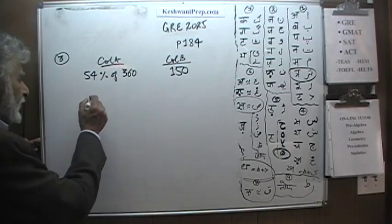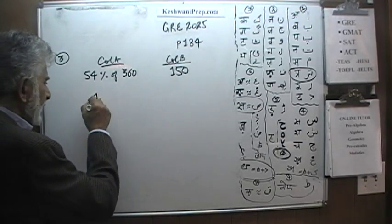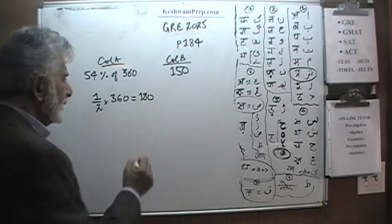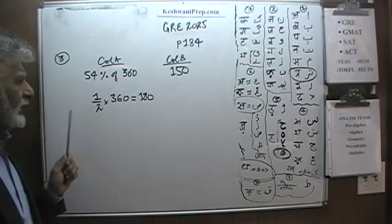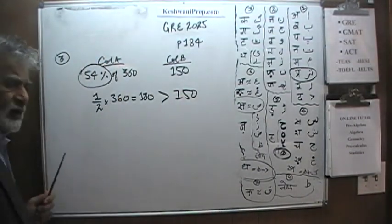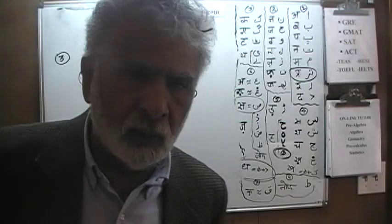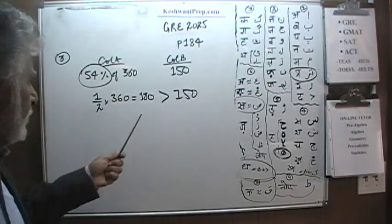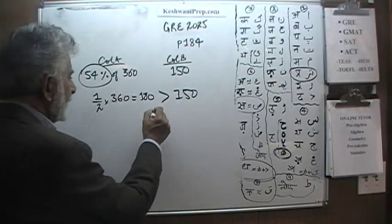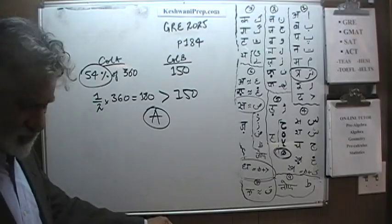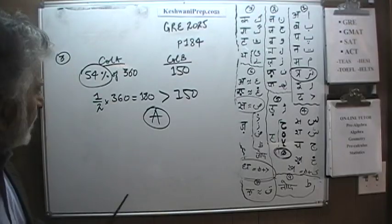Well, we know that half of 360 is already 180. If half of 360 is already 180, which is more than 150, then whatever the 54% is, we don't need to figure it out. But 54% obviously is going to be even more than 180. The answer is A. Let's look at the next problem.